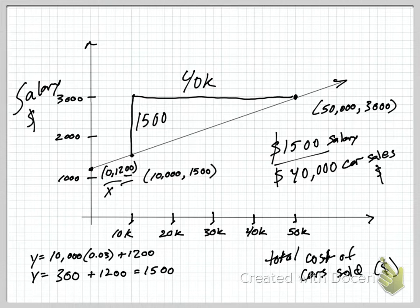Now our slope is rise of 1,500, run of 40k. Because we go from 1,500 up to 3,000, that's plus 1,500. And we go from 10,000 all the way over to 50,000. So that's a run of 40k.